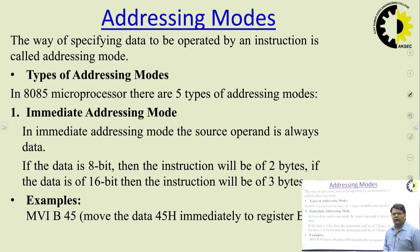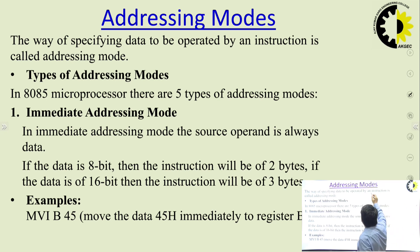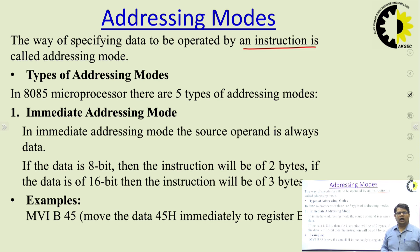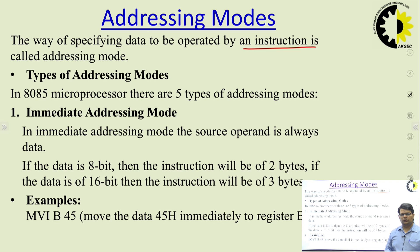Next is addressing modes. As studied previously, every instruction will have an opcode and operand. How operands are specified in an instruction, or how a microprocessor can access data, is known as addressing mode. We can provide data to the microprocessor through instructions in various forms or modes — these are known as addressing modes. For example, data over which the operation is to be performed may be directly available in the instruction itself; this is known as immediate addressing.